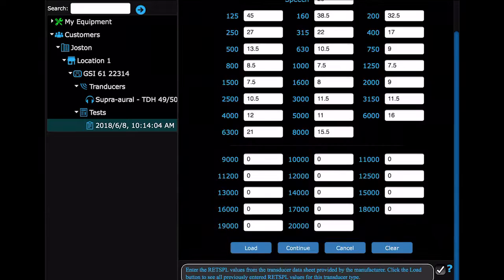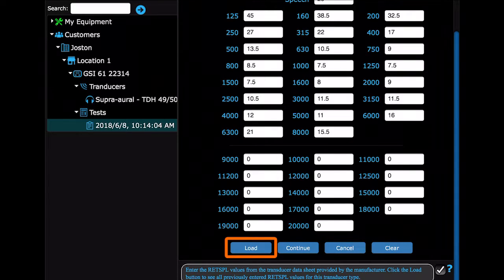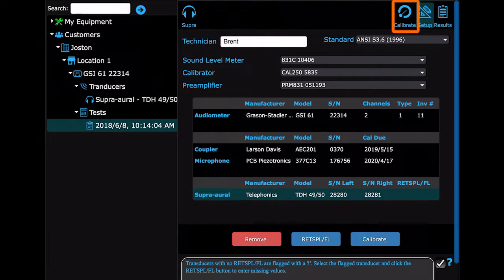You can load Red SPL values if you need to. Those standard values for that transducer coupler pairing will already be chosen for you. So we just select Continue. The final step is to Calibrate.